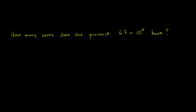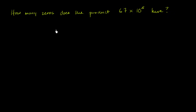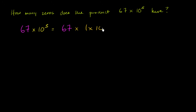Let's do another one on a similar topic. How many zeros does the product 67 times 10 to the fifth have? Well, there are a bunch of ways of thinking about that. 67 times 10 to the fifth is the exact same thing. You could view this as 67 times, using the same logic we just saw in the previous problem.